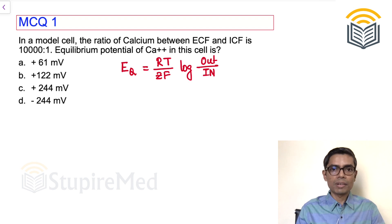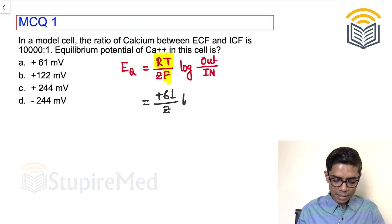Now, this is natural logarithm. If I convert this into log base 10 and if I put the normal value of this constant, that is R, T, and F, what will happen? This equation will be modified to plus 61 millivolt upon Z log base 10 concentration of the ion outside upon concentration of the ion inside.